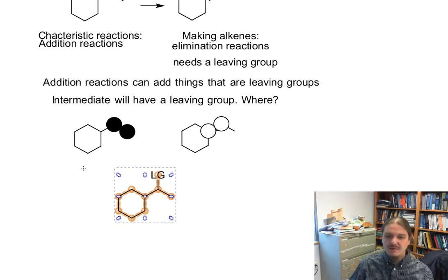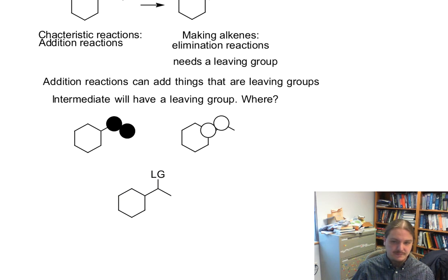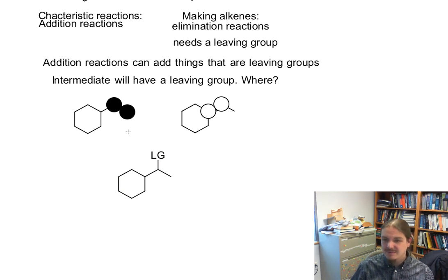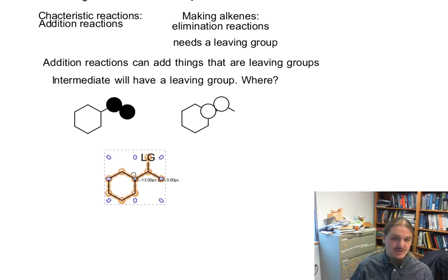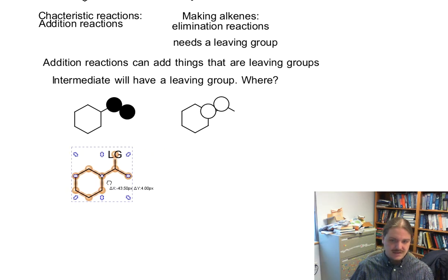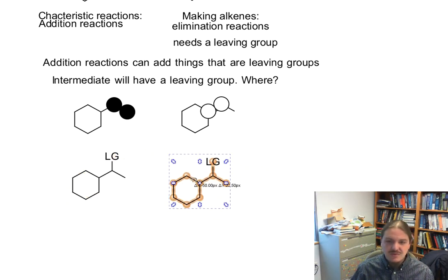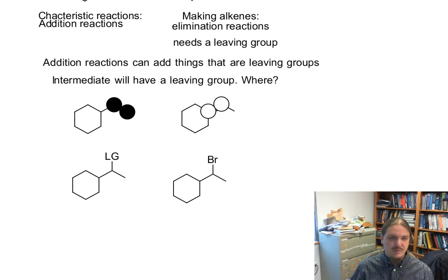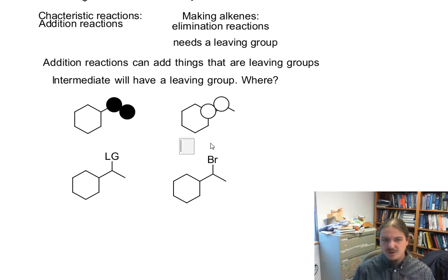Our logical intermediate is going to look like this. Now we need to choose a specific leaving group. Let's choose bromine as our logical intermediate. I have a reason for choosing bromine: there are more reactions that regio-selectively put bromine in places than the other halogens.